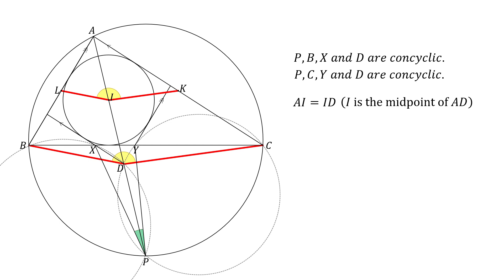If we can prove angle BDC and angle YPX add up to 180 degrees, angle KIL and angle XPY also add up to 180 degrees. In triangle BCD, three interior angles add up to 180 degrees.